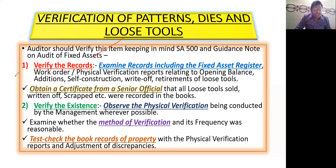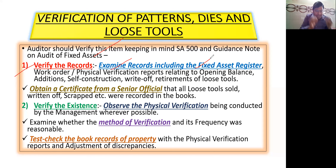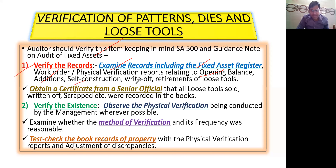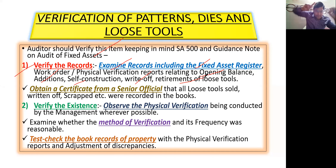First, the auditor will examine records — including the fixed asset register, work orders, physical verification reports relating to opening balance, additions, self-construction, write-off, and retirements of loose tools.